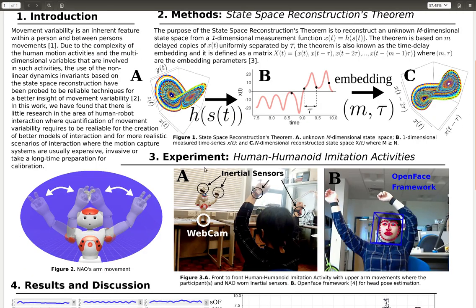The experiment: In the experiment we ask 18 participants to imitate what the robot does, and we attach inertial sensors to the robot and to the wrist of the persons. We also use a webcam to estimate the head pose using OpenFace framework.